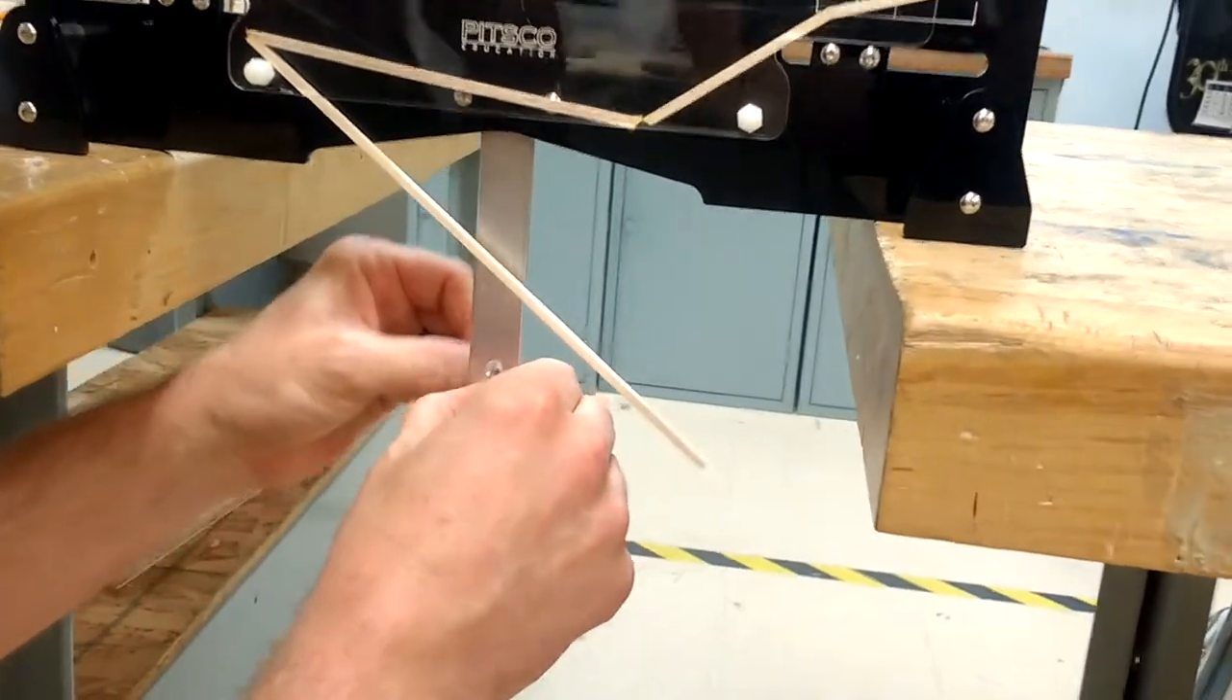Now that it's broken, you're going to want to take a picture of the broken truss, and on your actual drawing of the design, you're going to be telling us where exactly it broke.